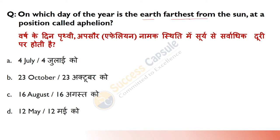On which day of the year is the Earth farthest from the Sun at a position called Aphelion? Answer is 4th July. Aur jo Perihelion hai, voh hota hai 3rd January ko, jis din Earth Sun ke sabse closest hoti hai.